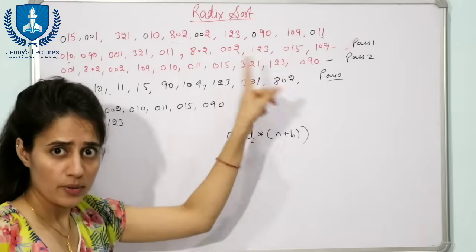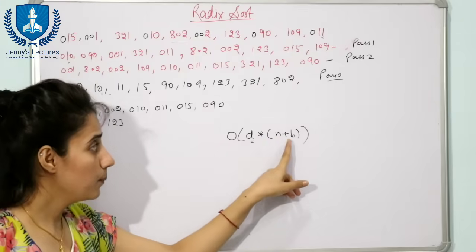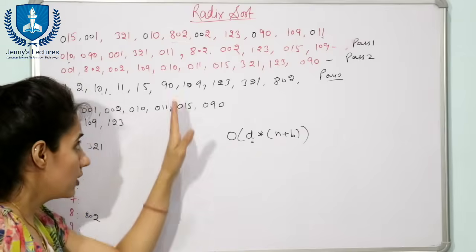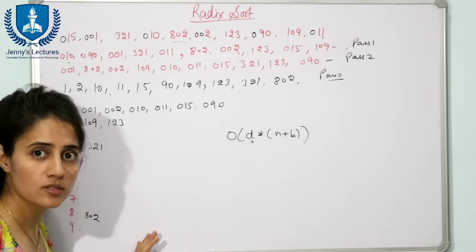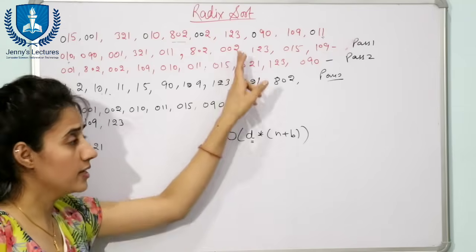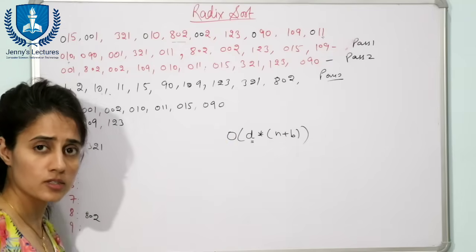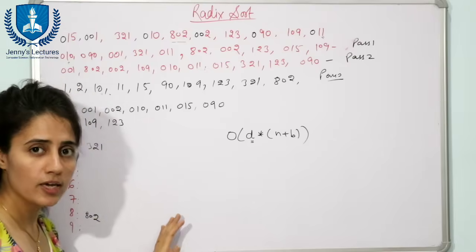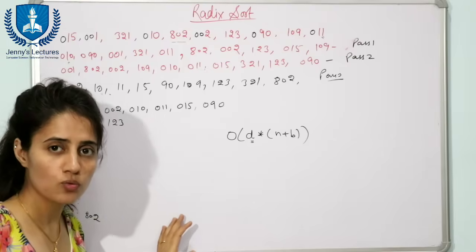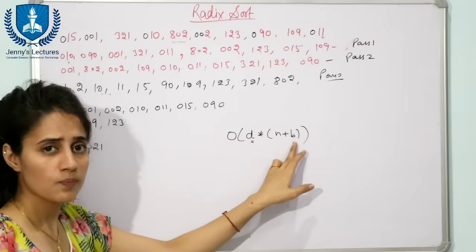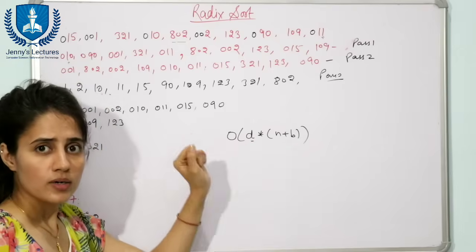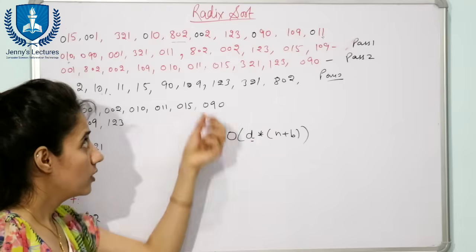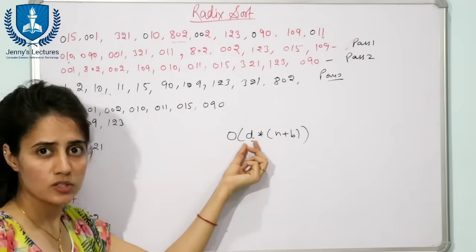n is the count of how many numbers there are, and b is the base. Since we take buckets equal to the base — here base is 10, so 10 buckets — for alphabets base is 26 so we would take 26 buckets. That is why the complexity is O(d × (n + b)), where d is the number of digits and we repeat the steps d times.